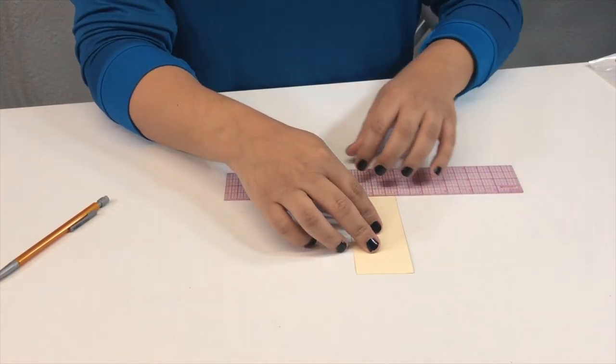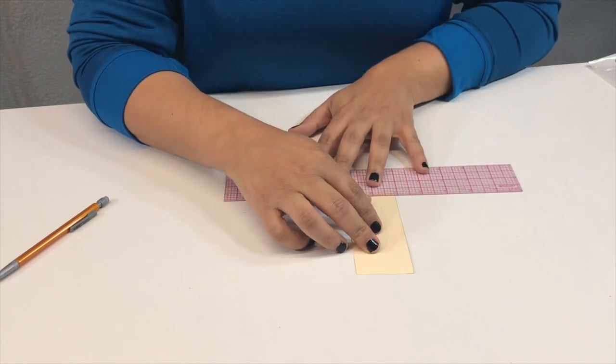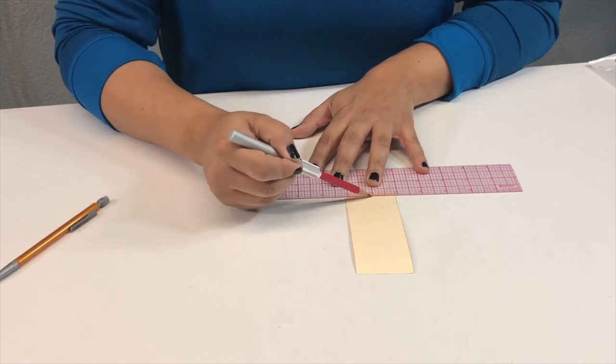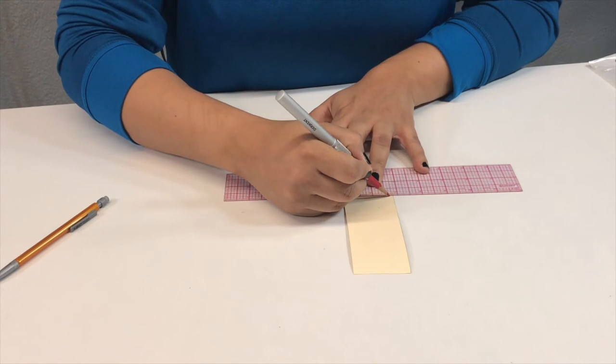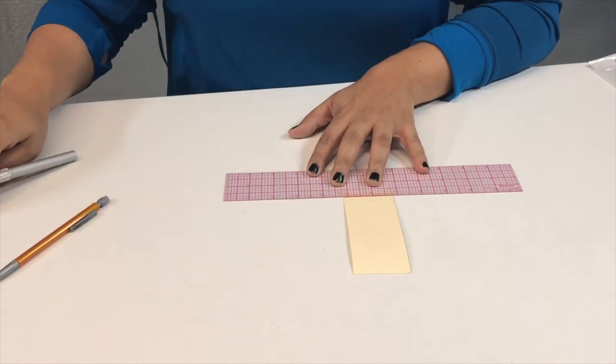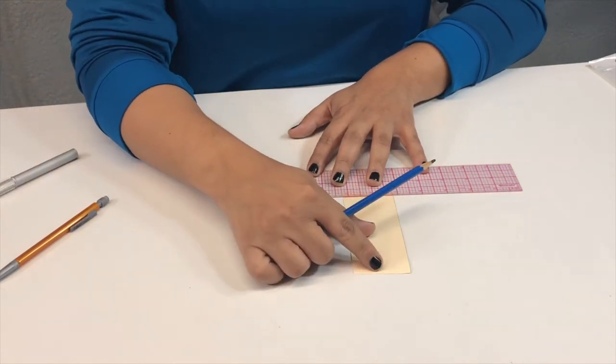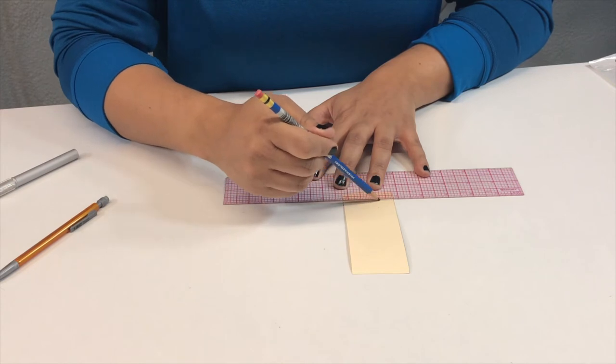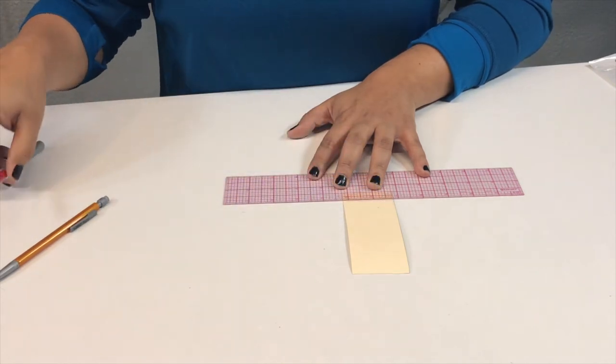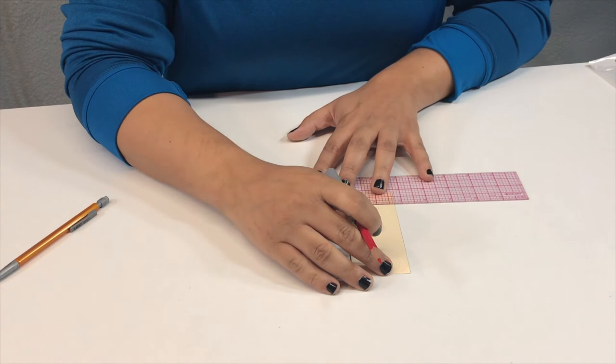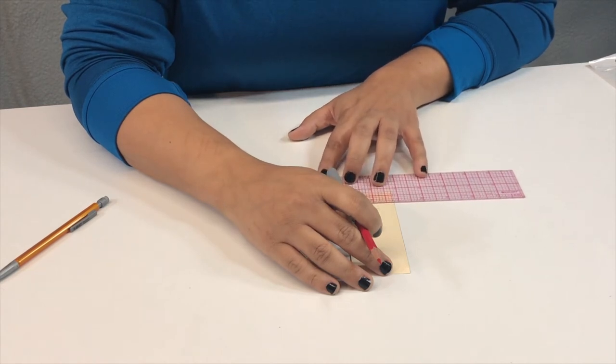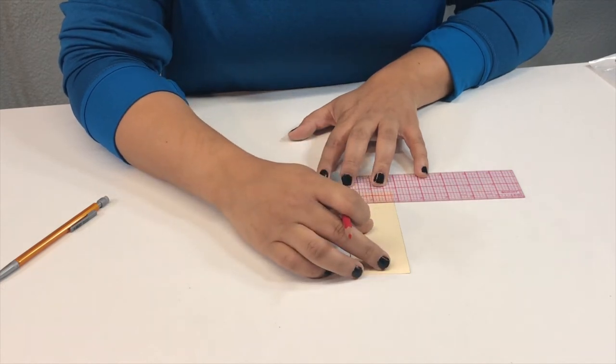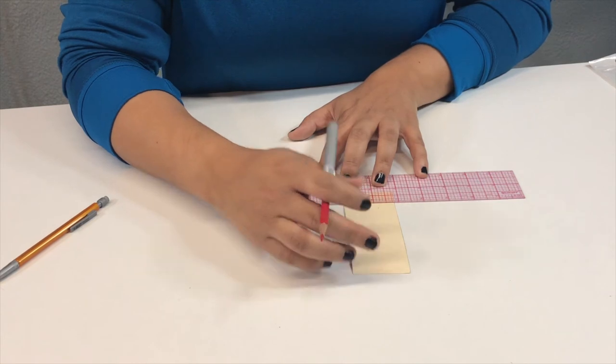I'm going to start with quarter inch using red, which is a color you can see very well. Then half inch will be blue. Red again for three-quarters inch.